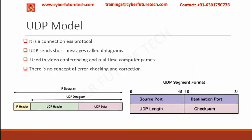UDP is a connectionless protocol used to send small messages called datagrams. UDP is used mainly in real-time services like video conferencing and real-time computer games. Unlike TCP, UDP doesn't provide error checking and error correction of data, so it saves bandwidth.